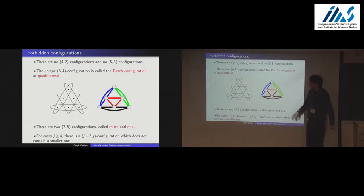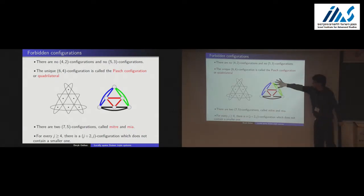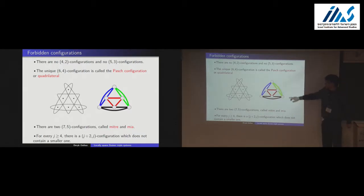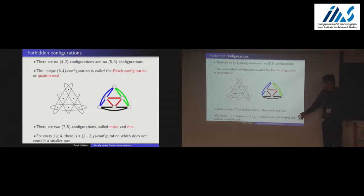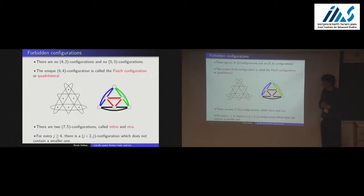For K equals 4 you have Steiner triple systems where you never find the Pasch configuration. For K equals 5 you get two additional configurations with special names, and for each further J you get at least one more forbidden configuration. So K equals 2 and 3 are the only exceptional values where nothing happens.